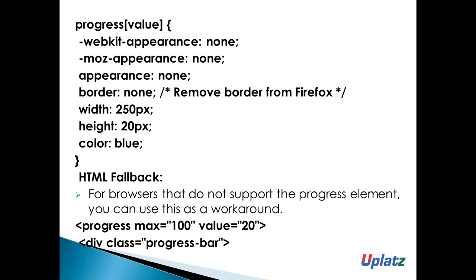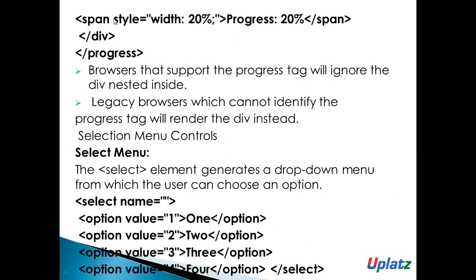For browsers that do not support the progress element, you can use a fallback: progress max 100, value 20, then a div with class progress-bar, and a span with style width 20 percent showing 'progress is 20 percent', closing div and closing progress. With the help of a span tag it will style that. Legacy browsers that cannot identify the progress element will use the div instead.